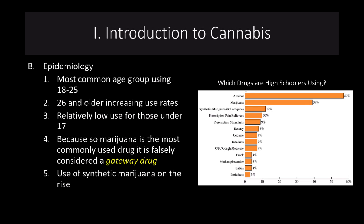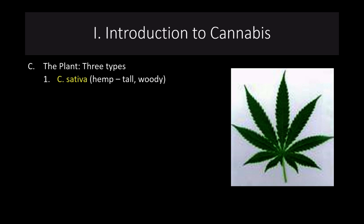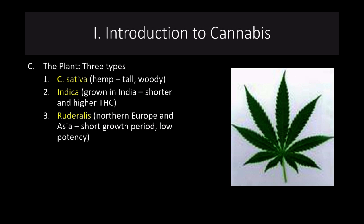There is some use of synthetic marijuana on the rise. We're not going to talk too much about synthetic marijuana, K2 or SPICE, because we want to focus on the best data we have. There are three types of cannabis plants: sativa, indica, and ruderalis. These all have different types and levels of THC. There are over a hundred cannabinoid types in most cannabis plants.